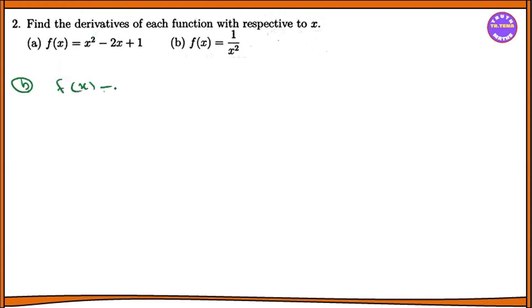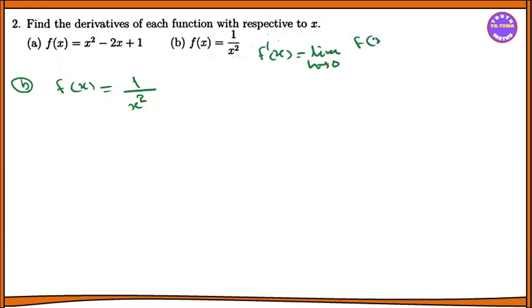f prime of x equal to 1 by x squared. Using the formula, f prime of x equal to limit h tends to 0 of f of x plus h minus f of x by h.